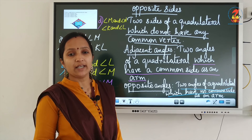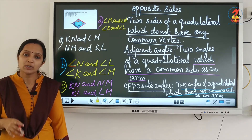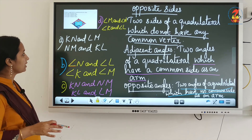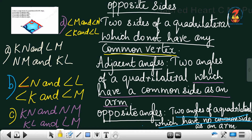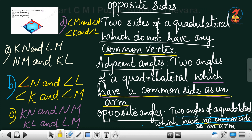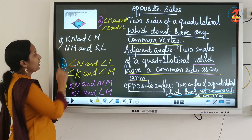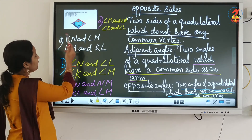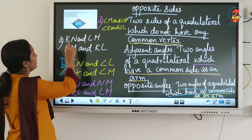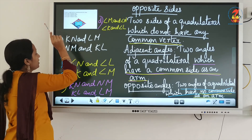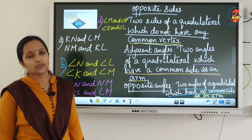Adjacent angle means common arm; opposite angle means no common arm; opposite sides means no common vertex; adjacent sides means a common endpoint or common vertex. Just go through the definitions. There are more than two pairs of adjacent sides and adjacent angles — write everything completely. Opposite sides, opposite angles, adjacent sides, adjacent angles are clear children. That is all for today. Thank you.